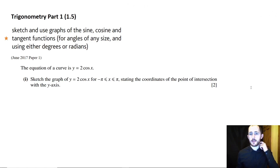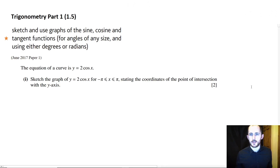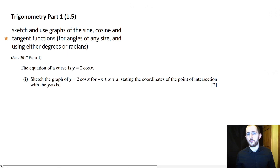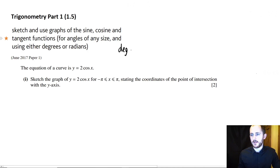Hello, welcome to Flip Academy. Today we're going to be looking at the first section of the trigonometry part of the specification, specifically looking at 1.5. The first thing you need to do is sketch and use graphs of the sine, cosine and tangent functions for angles of any size, using either degrees or radians. In order to go from degrees to radians, you're just multiplying by π over 180.